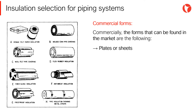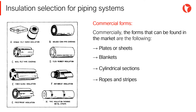Commercially, the forms that can be found in the market are the following: plates or sheets, blankets, cylindrical sections, ropes and strips, tailored blankets, and spray foam.